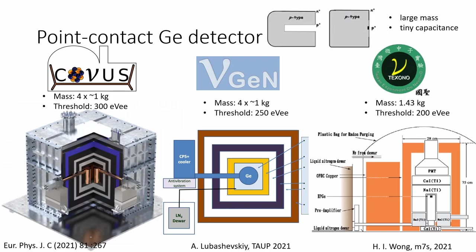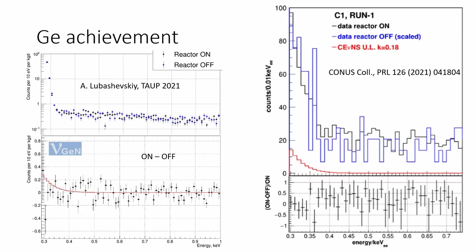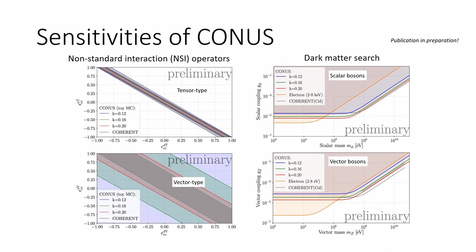Let's start with ionization detectors. Three experiments chose to use high-purity germanium detectors. Compared to regular HPGe detectors, these feature a very small contact, resulting in a tiny capacitance with a large detector volume. Tiny capacitance results in very small electronic noise, hence lower energy threshold. Another common technology is mechanical cooling, which is maintenance-free and provides active vibration reduction, hence even lower noise. Two of the experiments have multiple layers of lead, copper, and polyethylene shielding; another uses scintillation crystals for active veto. Two of them published their observed spectra this year, and they are very close to observing CEvNS. With existing data, one can already set constraints on non-standard neutrino interactions and dark matter.